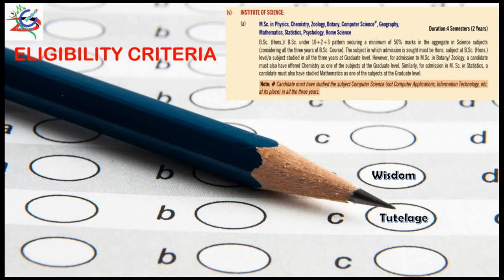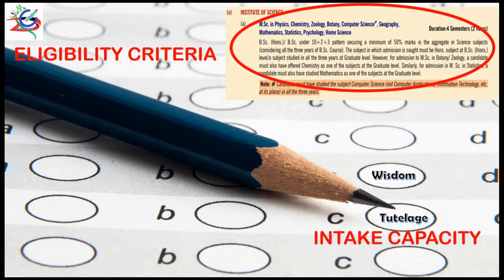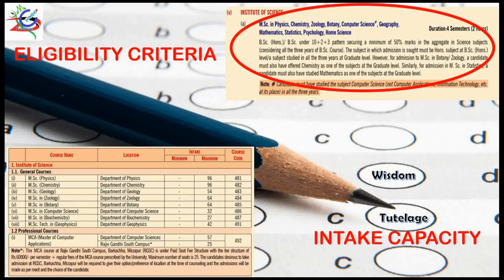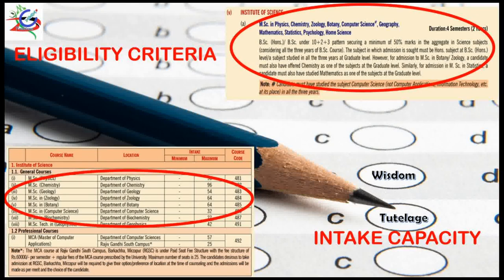Here is the eligibility criteria for admission in the postgraduate course, as well as the intake capacity of that particular course. I'm not going into much detail as it is already mentioned in the slide. The minimum percentage required for admission is 50% in aggregate in specified science subjects in the last UG exam. Total number of seats is 64 and the course code is 485 — just remember these three points.